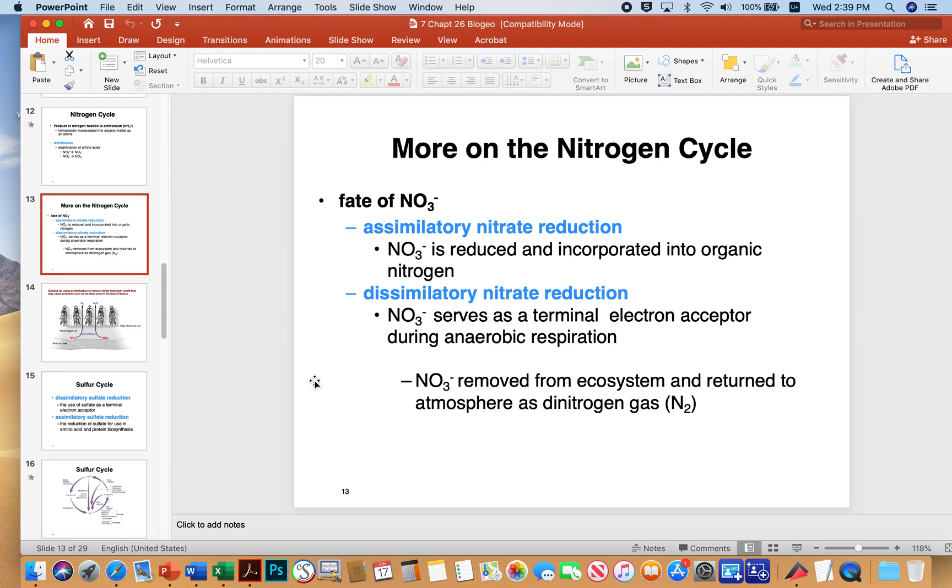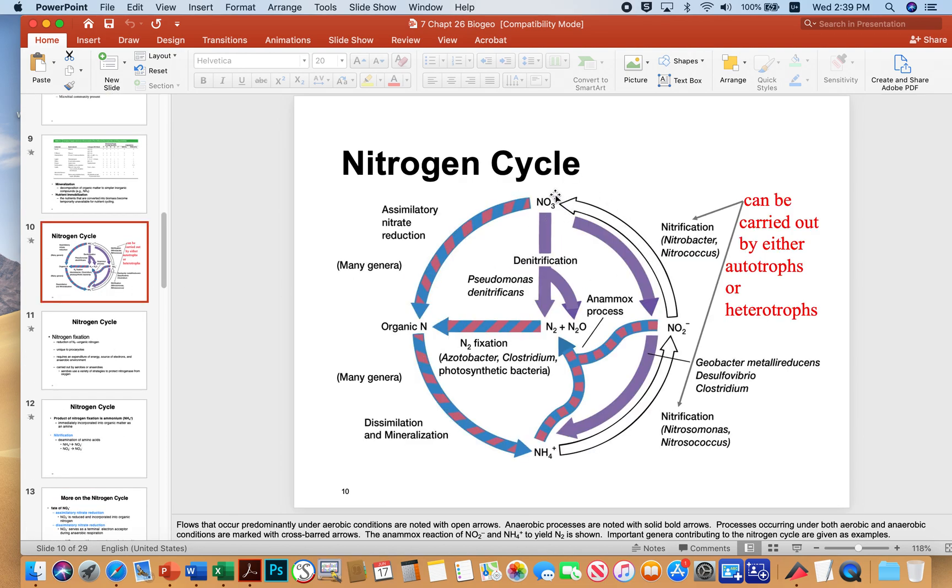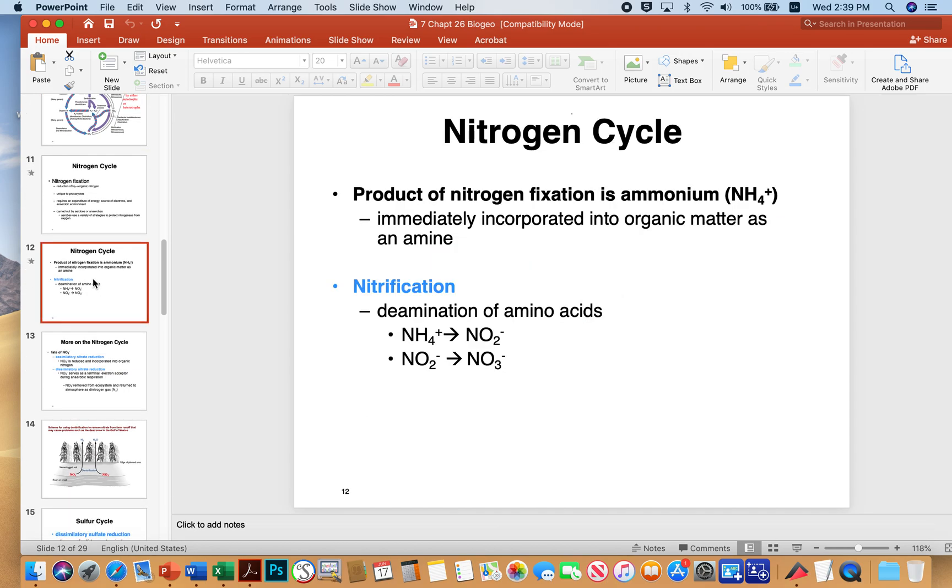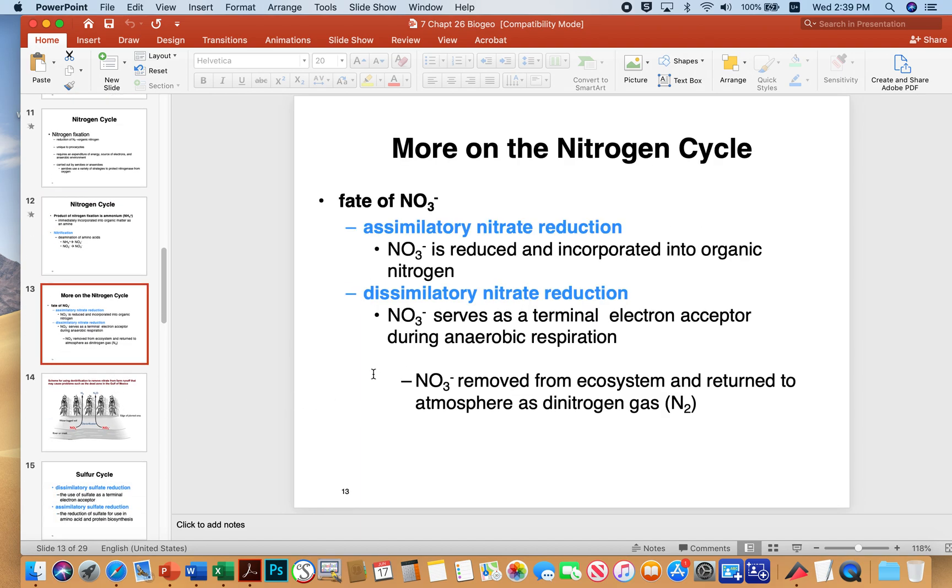The nitrate then can undergo two different things. You may want to cross-reference it to here because we're right here now. We've just gone from here to here to here, and now we're sitting here in that particular slide that I'm on. So here's our nitrate after nitrification. The nitrate can be assimilated into where it's incorporated into organic nitrogen or dissimilated where it's used as an electron acceptor and then just turned into nitrogen gas.